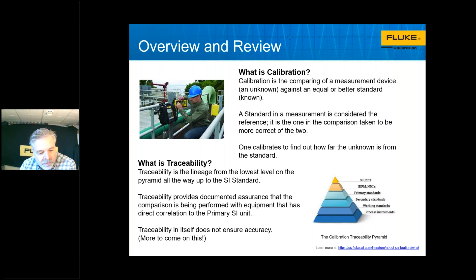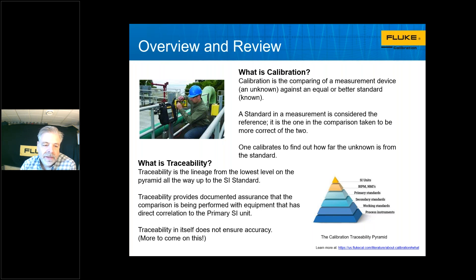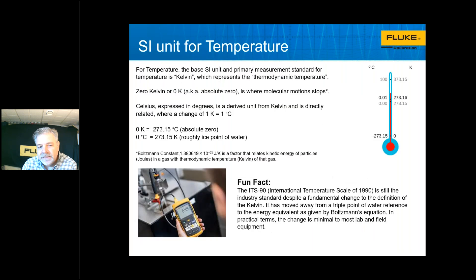There's another concept I want to make sure we understand: traceability. In simple terms, traceability is a documentation chain from your actual process instrumentation in the field, through the test and calibration equipment you use to do the calibration, all the way back to ITM standards at their repair and calibration facilities — back up to primary standards. It's that complete chain of accuracy. It's important to have traceability in place if you need to prove that your field calibrations are accurate, but traceability alone doesn't actually guarantee accuracy.